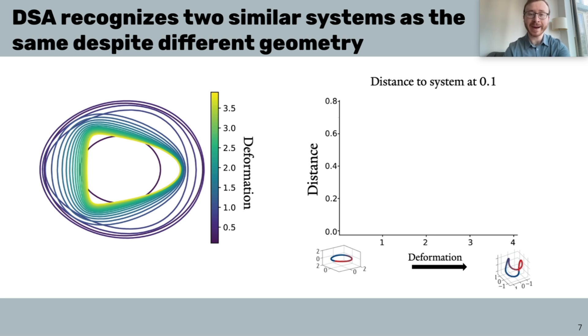We then compare these data at each parameter value to the smallest deformation parameter, a value of 0.1. And we see that while Procrustes increases smoothly as expected, because it's a geometric method, DSA stays close to zero, indicating that it identifies the dynamics as equivalent.